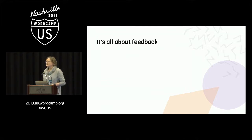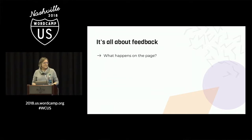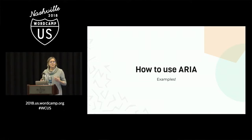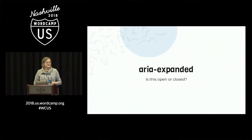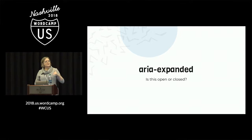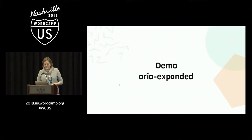It's all about feedback. ARIA — what happens on a page, what does it mean, how can I interact? I will give you four examples of how to use ARIA in a good way. The first one is aria-expanded: is something open or is something closed? If you can see, you can see that a menu or an accordion is open or closed. If you cannot see, it has to be announced to you, and that you do with aria-expanded. And now comes the demo.